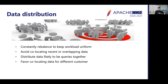In a distributed system, overall query performance is governed by the performance of the slowest node involved in query processing. If cluster load is not uniform, a few nodes will quickly get overloaded and severely impact overall query performance. We tried multiple load balancing strategies over time. The ones that worked were: avoiding co-locating recent or overlapping data on the same node since they are usually queried together, distributing data that is likely to be queried together across nodes to increase parallelism, and favoring co-locating data from different customers.